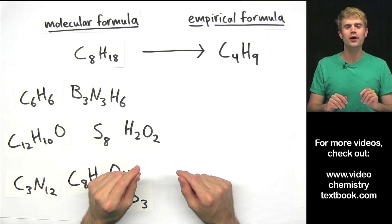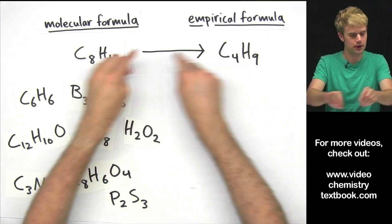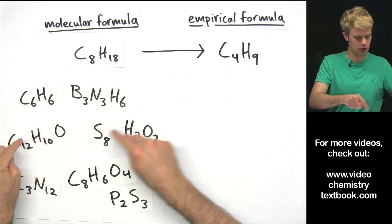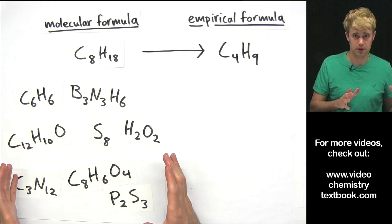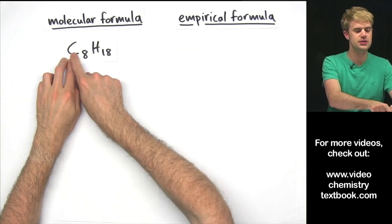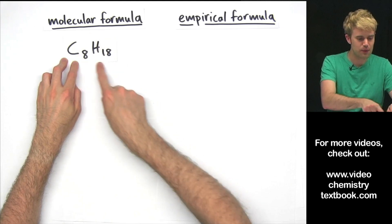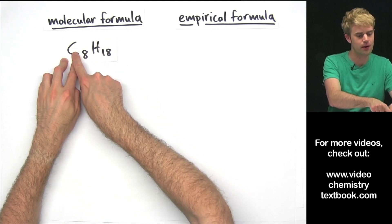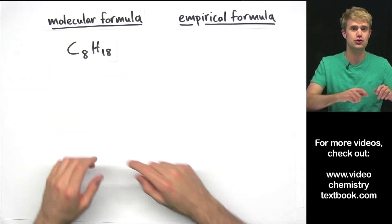In this video, we're going to learn how to write empirical formulas just like this for all of these molecular formulas. Here's our first example: C8H18, which represents a compound that has 8 carbons and 18 hydrogens.